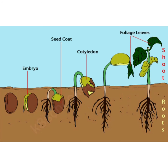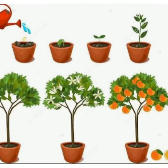The seed coat breaks open and the root of the baby plant emerges. The embryo swells and lengthens. Embryo means a small baby plant inside a seed. The root of the baby plant starts growing, and the plant grows in size as new leaves start developing.